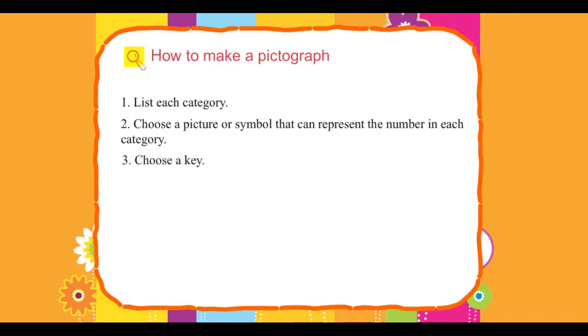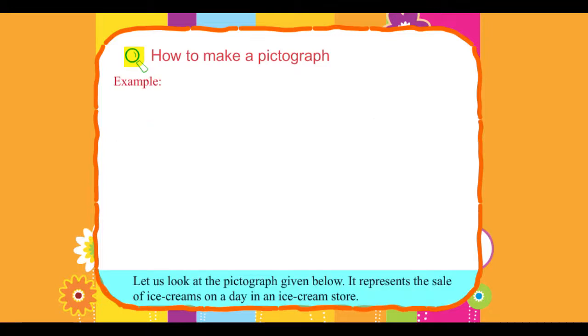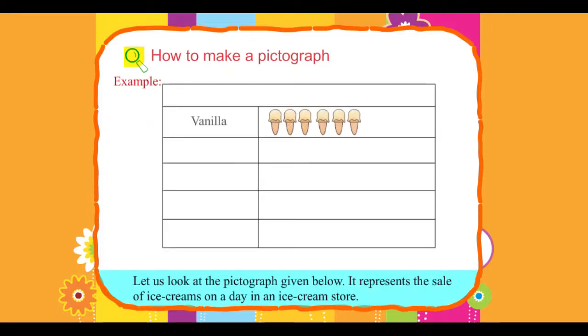3. Choose a key. 4. Draw pictures to represent the number in each category. 5. Label the pictograph, write the title and the key. Example: Let us look at the pictograph given below. It represents the sale of